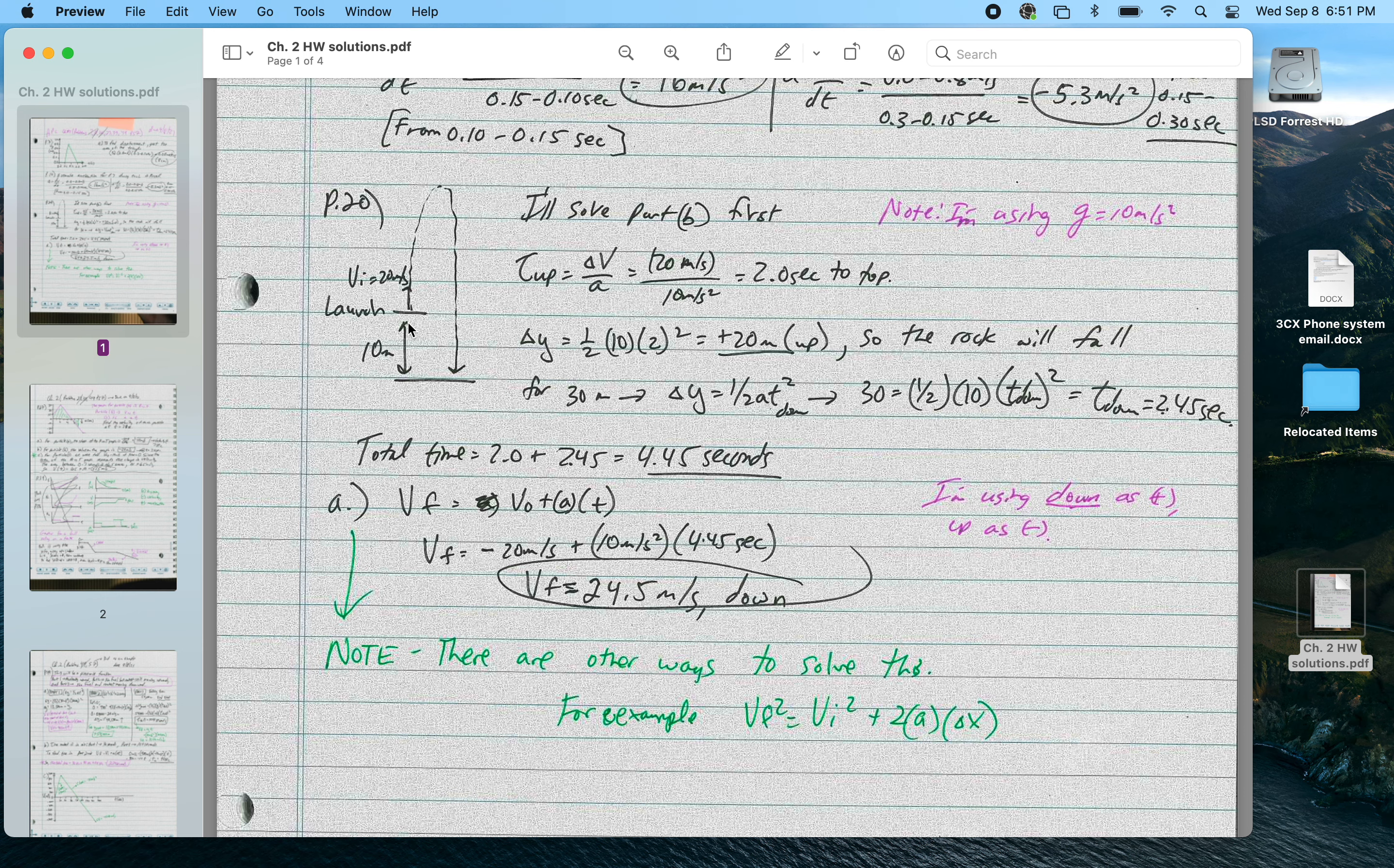So I'm going to think about two parts, part upward and then part downward. So the time upward would be change in velocity over acceleration is equal to change in time. 20 meters per second divided by 10 meters per second squared, so it takes two seconds to get to the tippy top of that path.